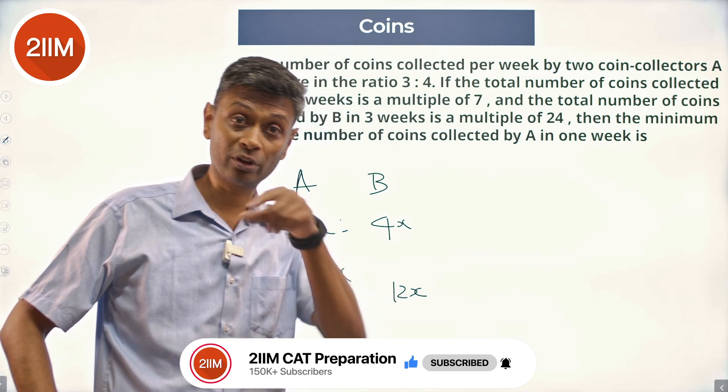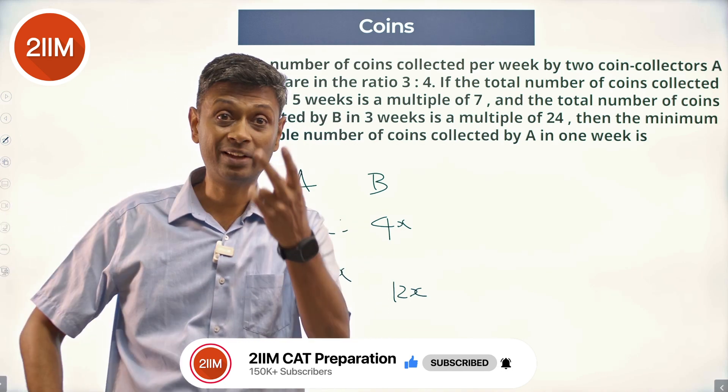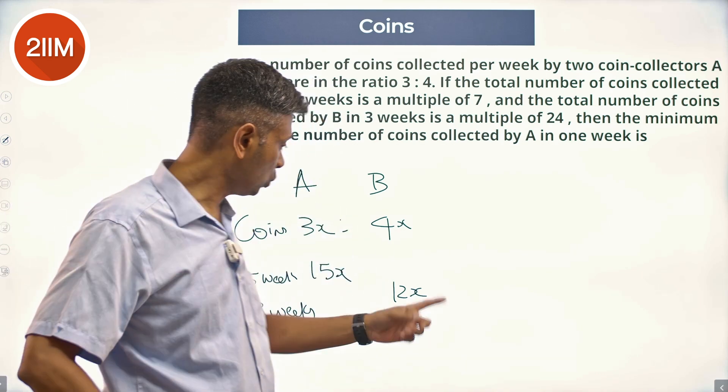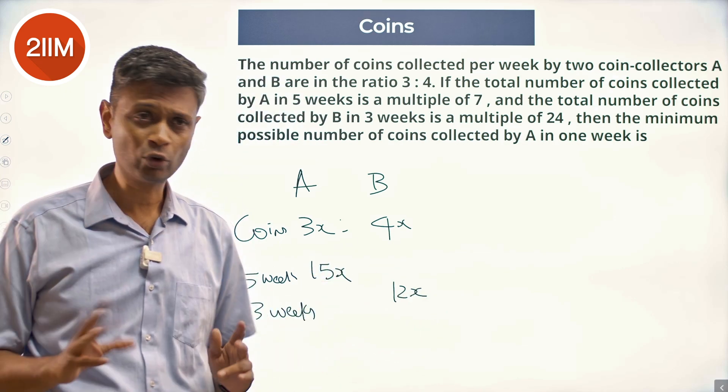12x is a multiple of 24. There is already 12 sitting in there, x has to be a multiple of 2. X has to bring in 2. So 2 and 7, x has to be a multiple of 14.